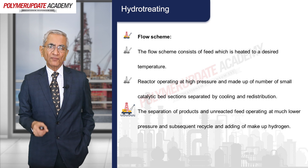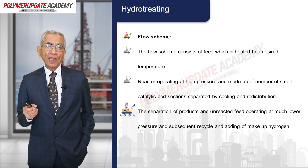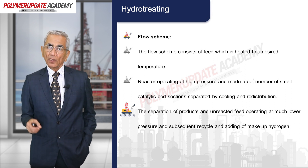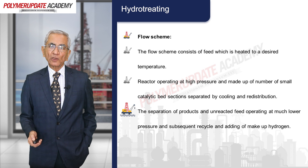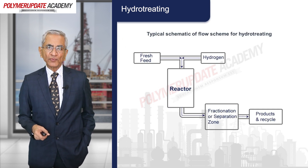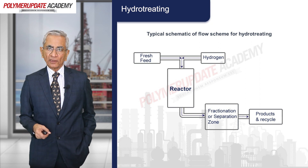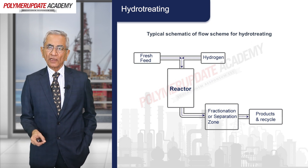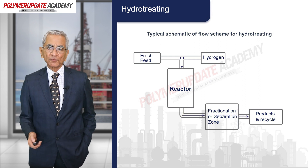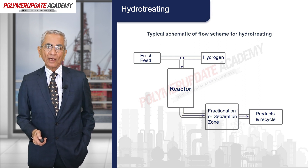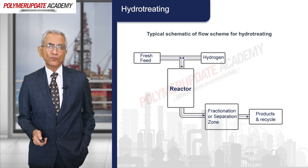The separation of products and unreacted feed operates at much lower pressure at the outlet, with subsequent recycle and addition of makeup hydrogen forming the base of this process. Fresh feed and hydrogen enter the reactor; the products from the reactor are fractionated for separation. The desired products and unreacted hydrogen then go for recycle.